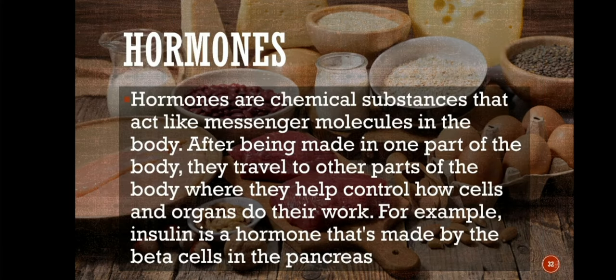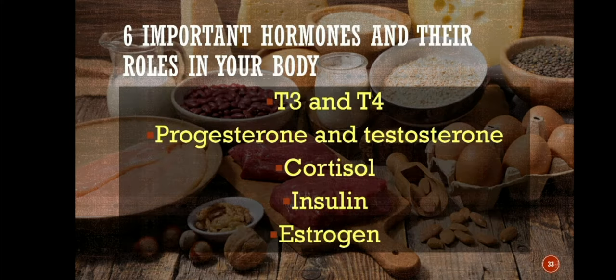Hormones are chemical substances that act like messenger molecules in the body. After being made in one part of the body, they travel to other parts where they help control how cells and organs do their work. For example, insulin is a hormone made by beta cells in the pancreas. Let's talk about the 6 important hormones and their roles in your body.